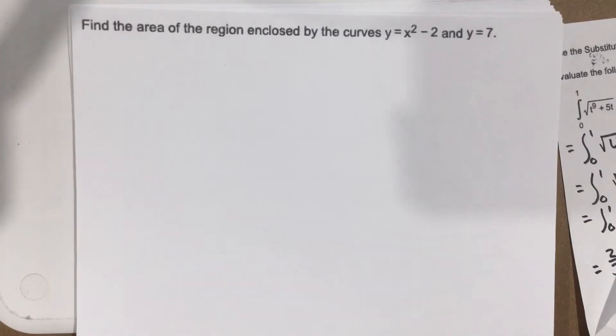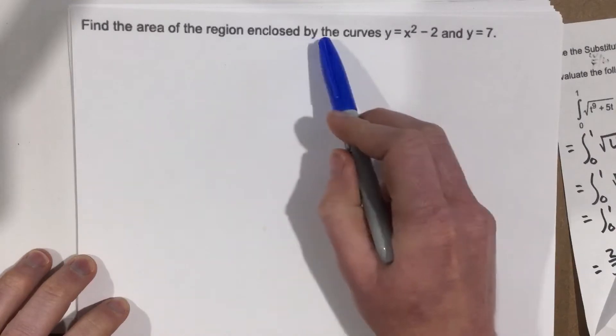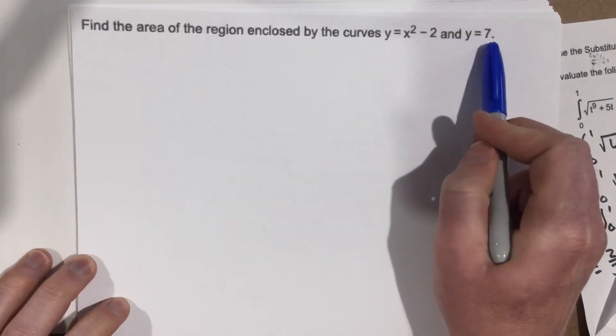This is problem number 5 from section 5.6. It says, find the area of the region enclosed by the curves y equals x squared minus 2 and y equals 7.